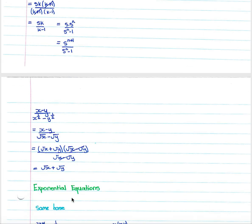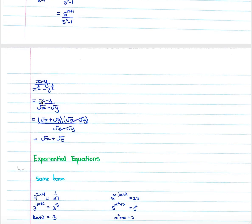For an expression like (x minus y) over (x to the half minus y to the half), we note that x to the half is the square root of x and y to the half is the square root of y. So we have (x minus y) over (root x minus root y). We factorize the numerator as a difference of squares: (root x plus root y)(root x minus root y). The (root x minus root y) terms cancel, leaving root x plus root y. The presence of a minus in the denominator tells us we must factorize by splitting the numerator into these two factors.